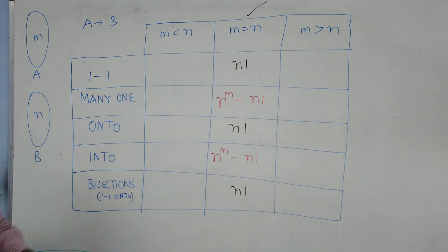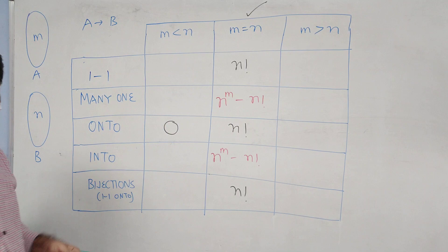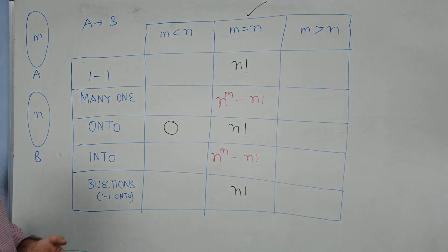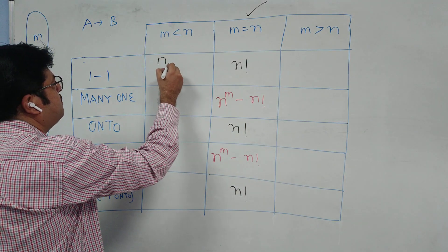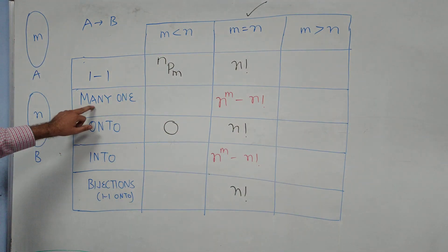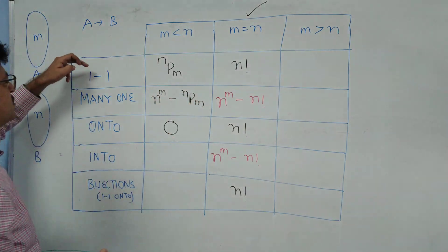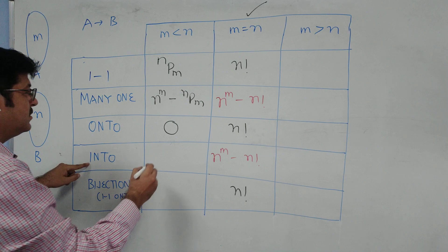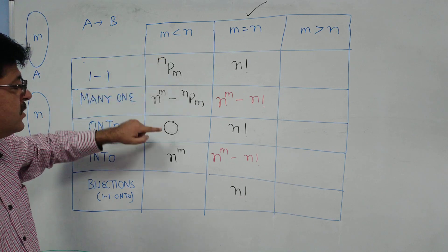When M is less than N: onto is not possible, so there are zero onto functions. The number of one-one functions is nPm (N permutation M). Many-one functions equal total functions minus nPm. Since there is no onto function, all functions are into only, giving N to the power M. There are also no bijections in this case.